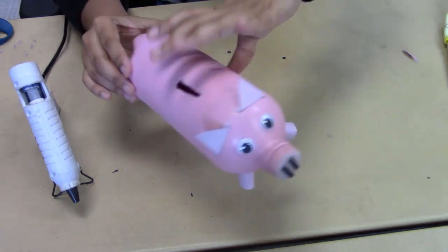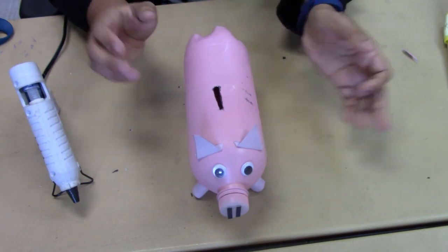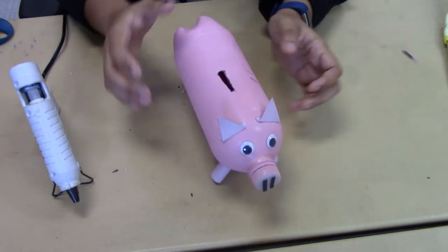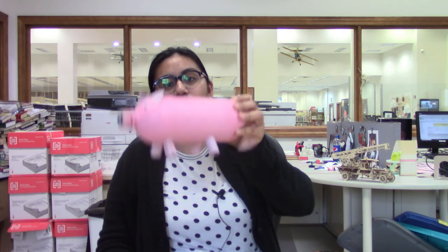All right, so then you have all the legs on there and you can just sit them down. All right, so that is how you make your plastic bottle piggy bank.